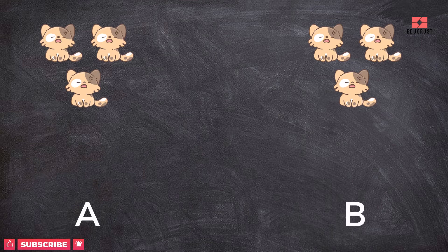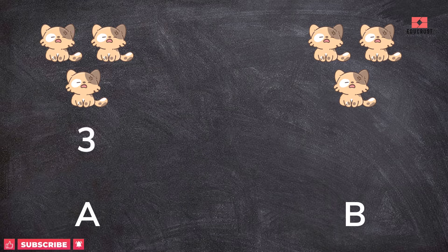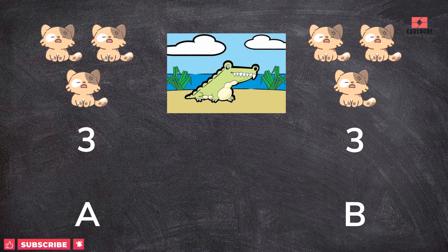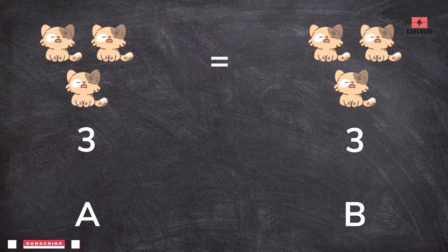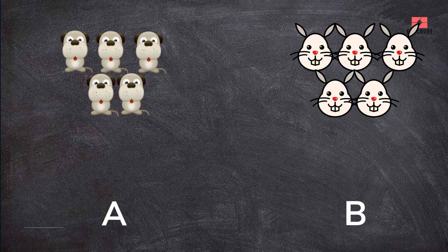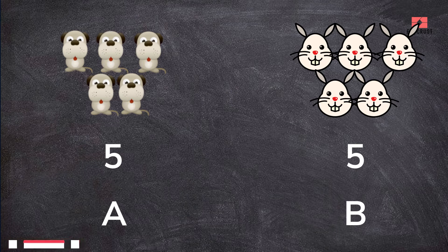Look at the pictures A and B. A has three cats and B has three cats. Both have the same number of cats, so the crocodile is confused as to which number to eat and will not open his mouth. Look at the pictures A and B. A has five dogs and B has five rabbits. Both have the same number.